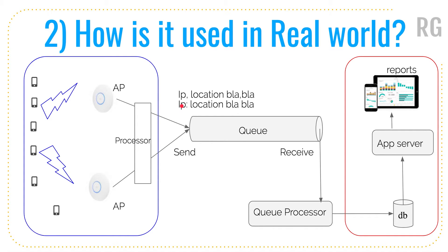The second use case: you may have noticed there are many wireless access points or routers within a company. When you connect your phone or desktop to the wireless network, it connects to an access point and lots of logs are generated — tracking the user, IP address, location, and more. If you want to generate a report on how many users are accessing a given access point or from which location, you can get all that information from the logs.